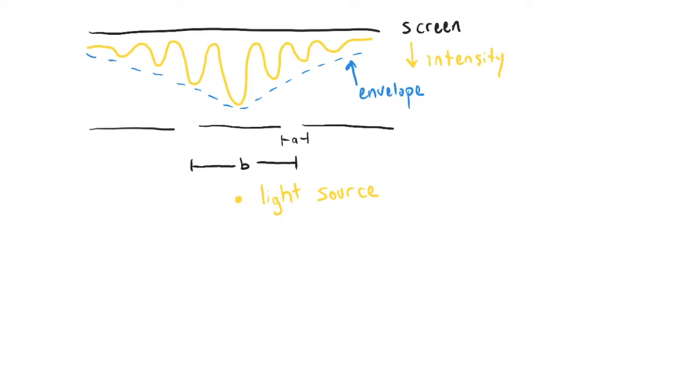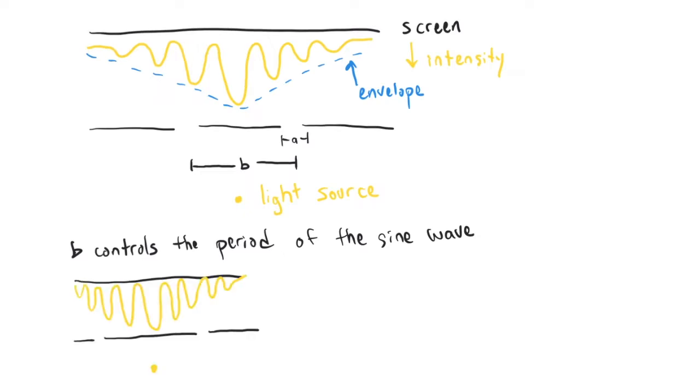But what I want to emphasize here is how the length scales A and B control the shape of the sine wave and the envelope. B, the distance between the two slits, controls the period of the sine wave. So what I've sketched here is a case where we've made B bigger, moved the slits further apart, and the sine wave is oscillating more rapidly. Now, rapid might be a little bit of a confusing word. There's no time here. It's rapid as a function of spatial position. So it goes up and down. The fringe pattern moves faster. Again, faster is a confusing word because there's no time, but the fringes are closer together the further apart you make the slits.